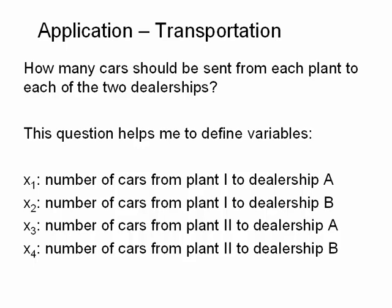I know there are four unknowns, so using just x, y, and z won't be enough variables. I'm going to use x sub 1, x sub 2, x sub 3, and x sub 4. So x sub 1 is the number of cars from plant 1 to dealership A, x sub 2 is from plant 1 to dealership B, x sub 3 is from plant 2 to dealership A, and x sub 4 is from plant 2 to dealership B.